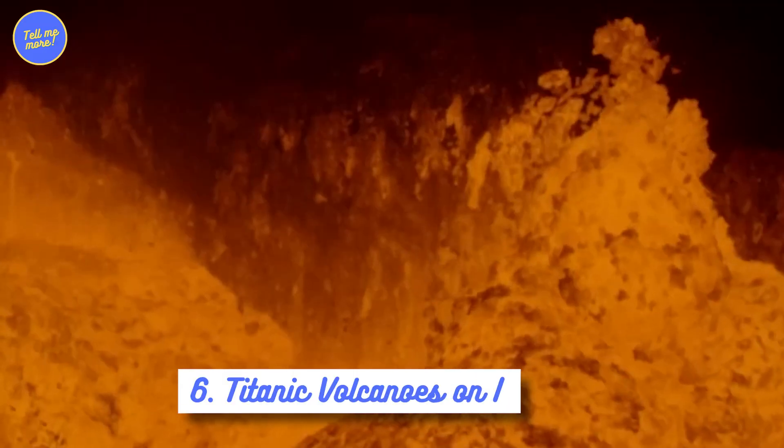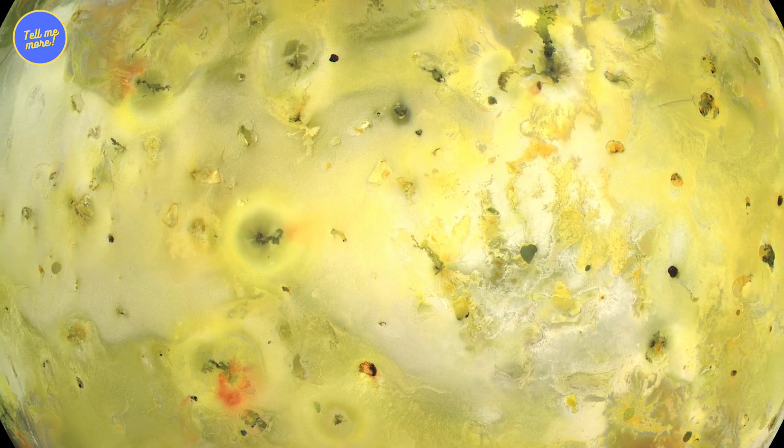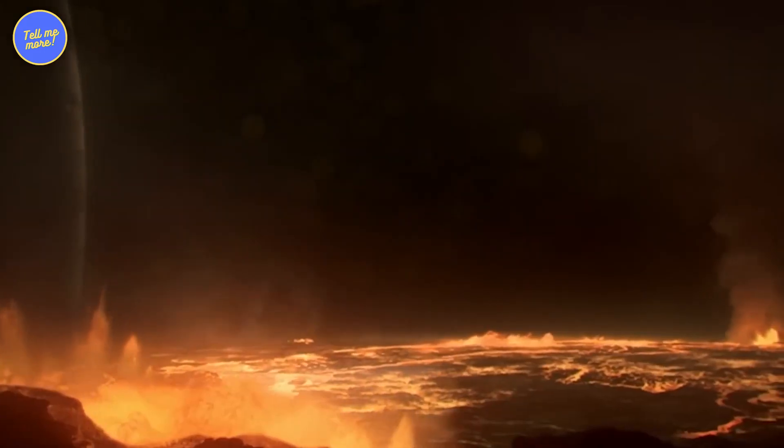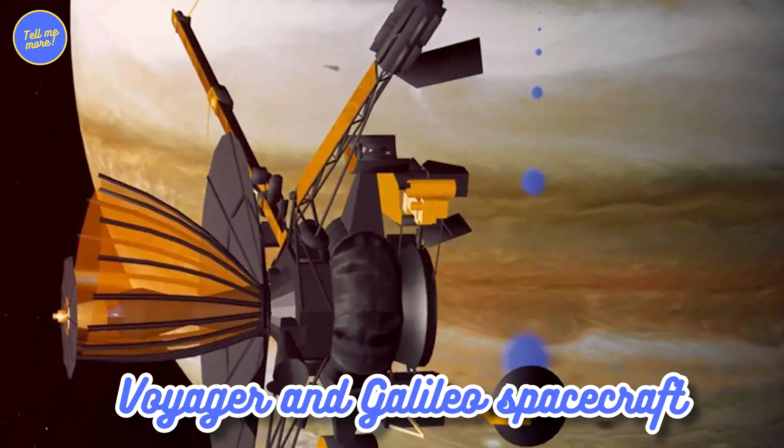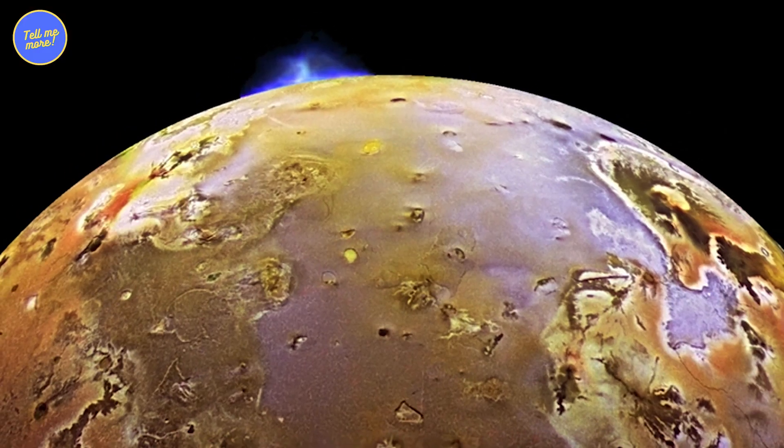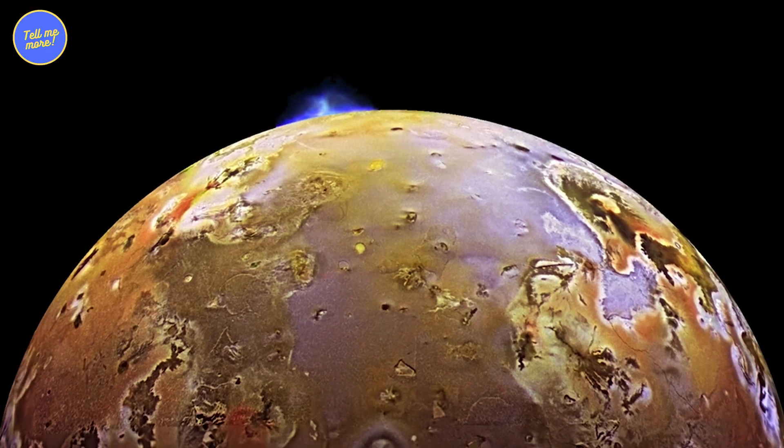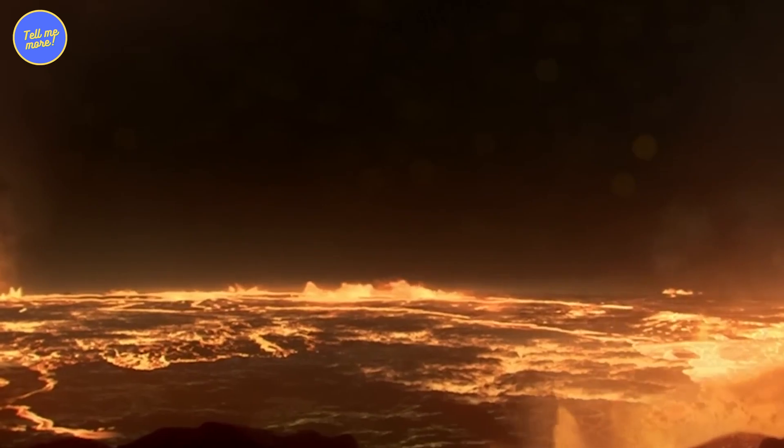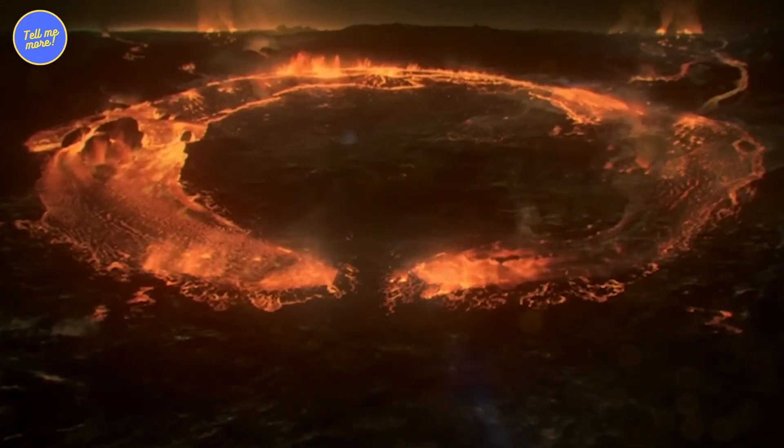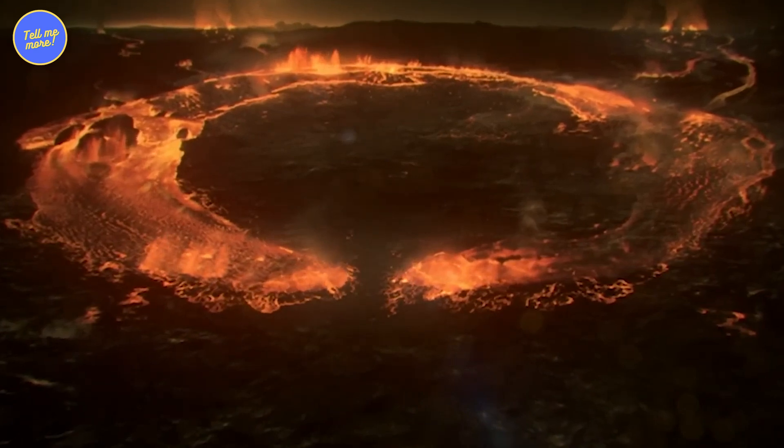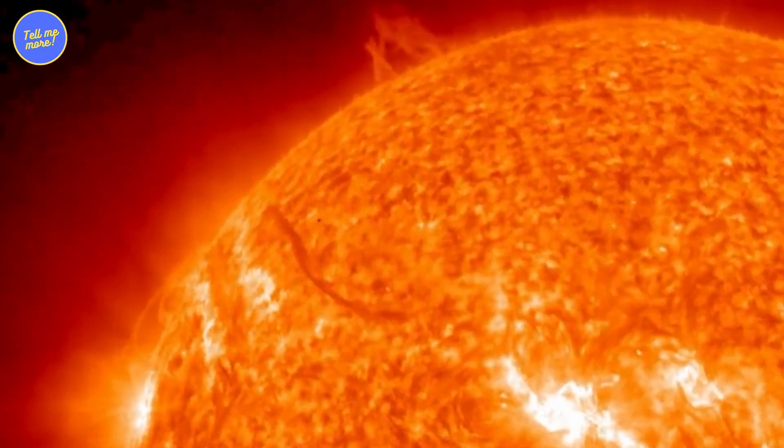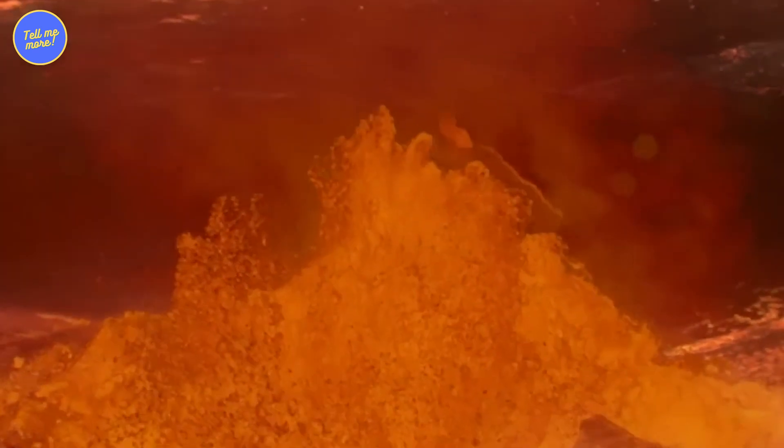6. Titanic Volcanoes on Io. Jupiter's moon Io might look like a peaceful orb from afar. But up close, it's a volcanic party that never ends. Thanks to Voyager and Galileo spacecraft, we learned Io has over 400 active volcanoes. That's right, 400. These aren't your gentle lava flows either. Io's volcanoes spew out plumes of stuff into space like fireworks on the 4th of July.